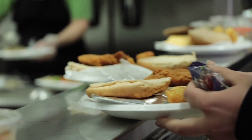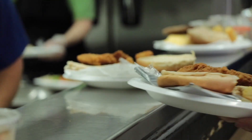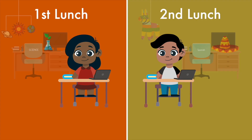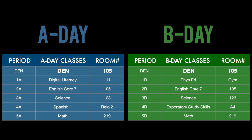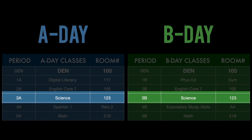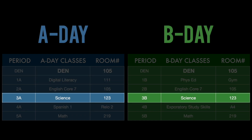The first thing you'll want to do is figure out which lunch you have, either first lunch or second lunch. To know which lunch you have, you have to look at your third period class. So think about your third period class.